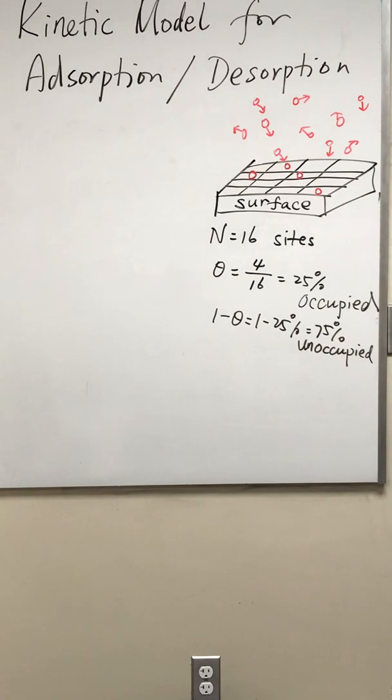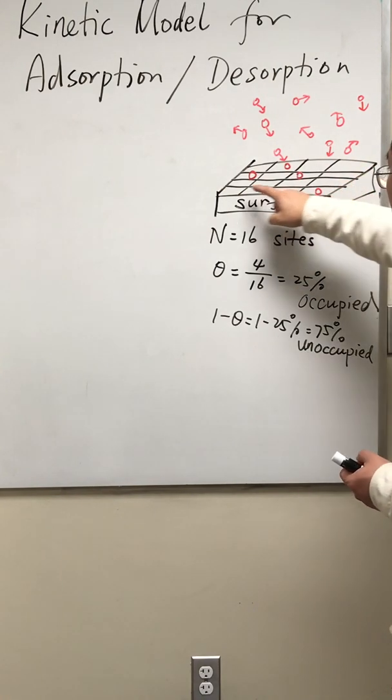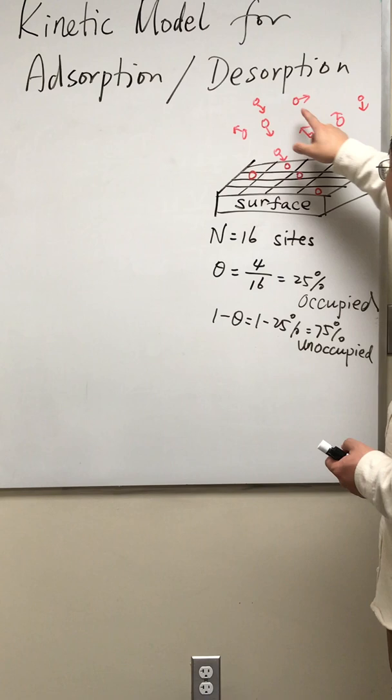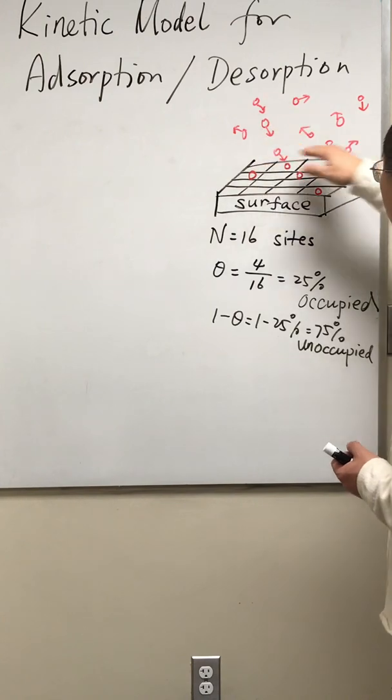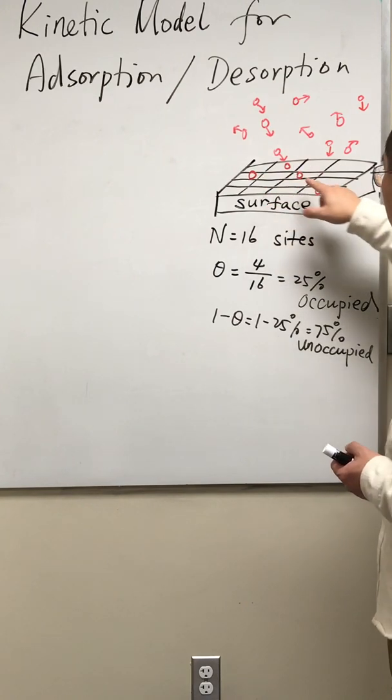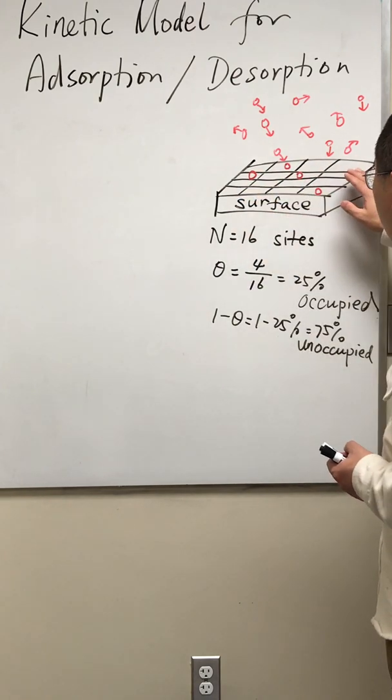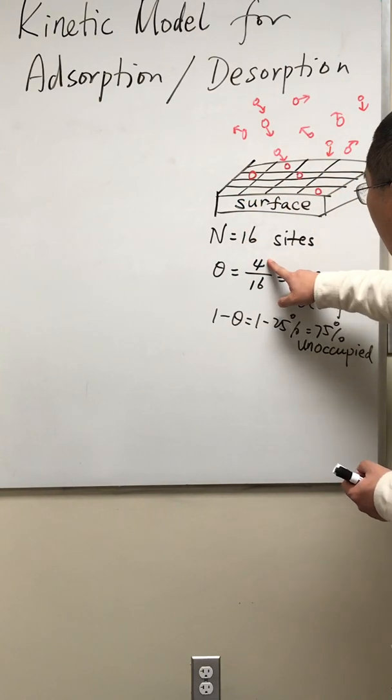I will talk about the kinetic model for adsorption and desorption. If we look at this diagram, here is the surface and I drew four by four, a total of 16 surface sites. Those red circles are the gas molecules, so we have a total of ten molecules in the gas phase. Also, there are four red circles that have been absorbed on the surface, so out of the 16 adsorption sites, four are occupied.